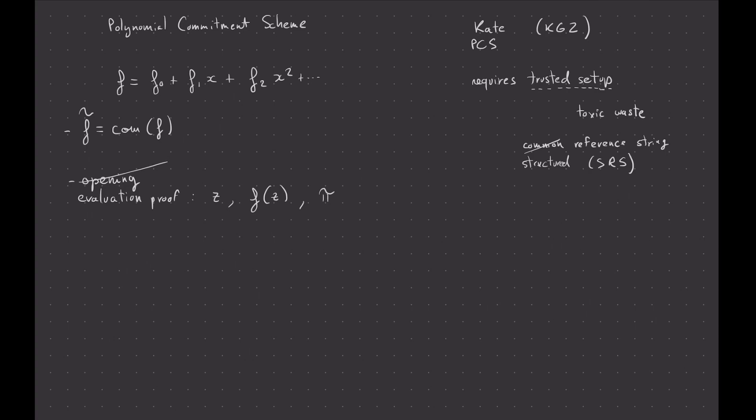And the reason why there is a trusted setup is that you need to generate a bunch of points on a curve, an elliptic curve. Although it could be, I guess, in a group. But here, we'll use elliptic curves, because this is what people use the most when they instantiate these schemes. You need to generate a bunch of points, and the discrete logarithm of these points needs to remain secret. But you need to know the discrete logarithm when you generate them. And so I'll explain how the Kate polynomial commitment scheme works in the next video.